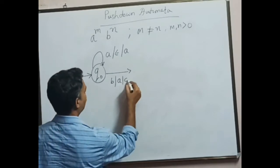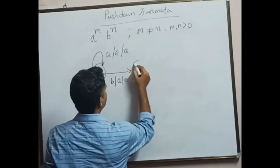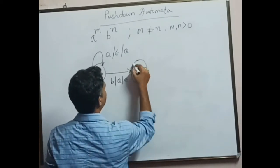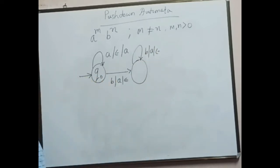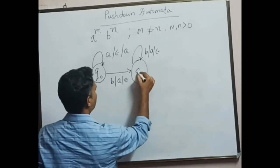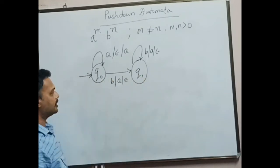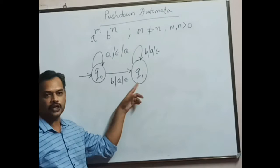Next, it can continue popping a's if at all a's are there onto the stack, and can proceed further by making a transition from q naught to q1 based on the previous input.